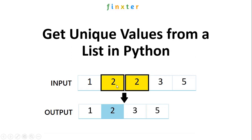As you can see, one of the 2's has been removed and we consider only one 2 from this list. Similarly, if there were any other elements that would have been repeated in the input list, that element would have been eliminated and this would have been the output list. I hope the question is now clear. Let us go ahead and find out the methods that will help us to solve this question.